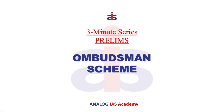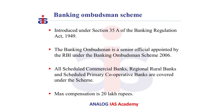Welcome to Analog IAS. Today we are going to discuss an important concept called the Ombudsman Scheme. There are three types of these schemes: one is the Banking Ombudsman Scheme, another is the Non-Banking Financial Company Ombudsman Scheme, and finally the Ombudsman Scheme for Digital Transactions. Let us first discuss the Banking Ombudsman Scheme.